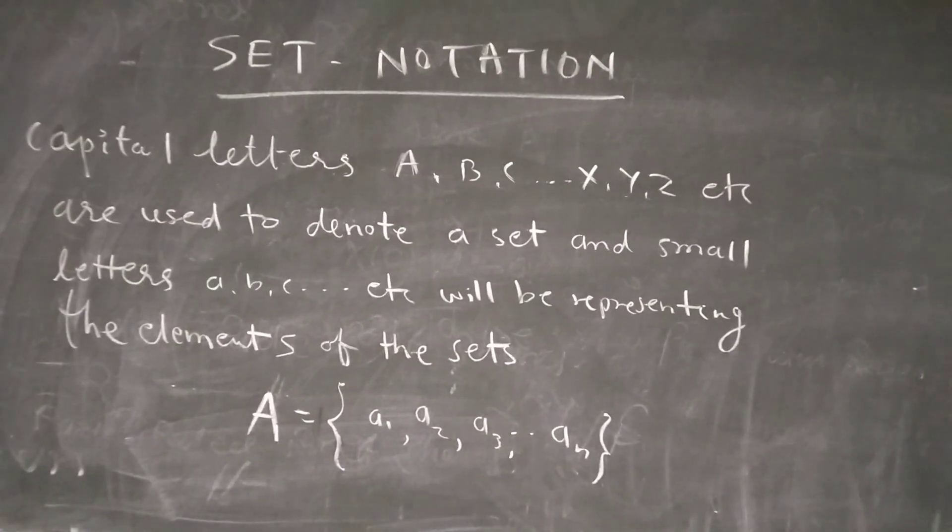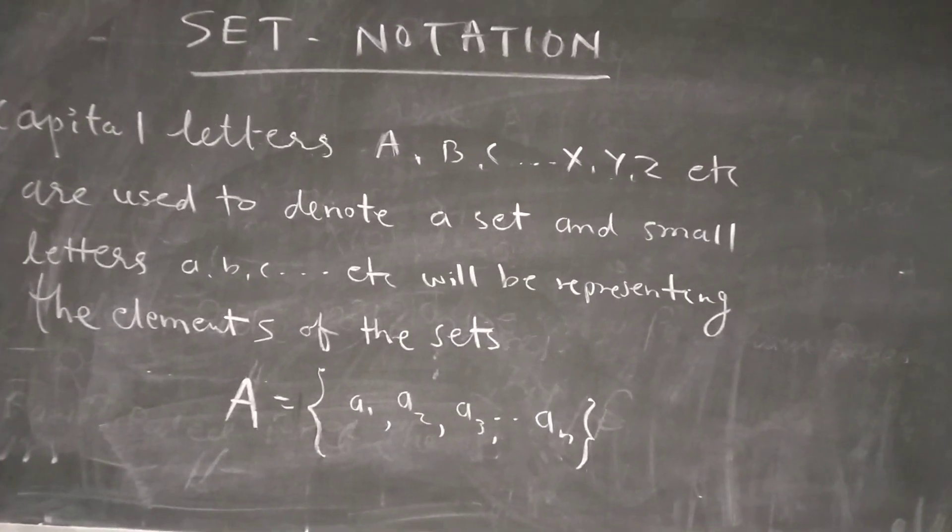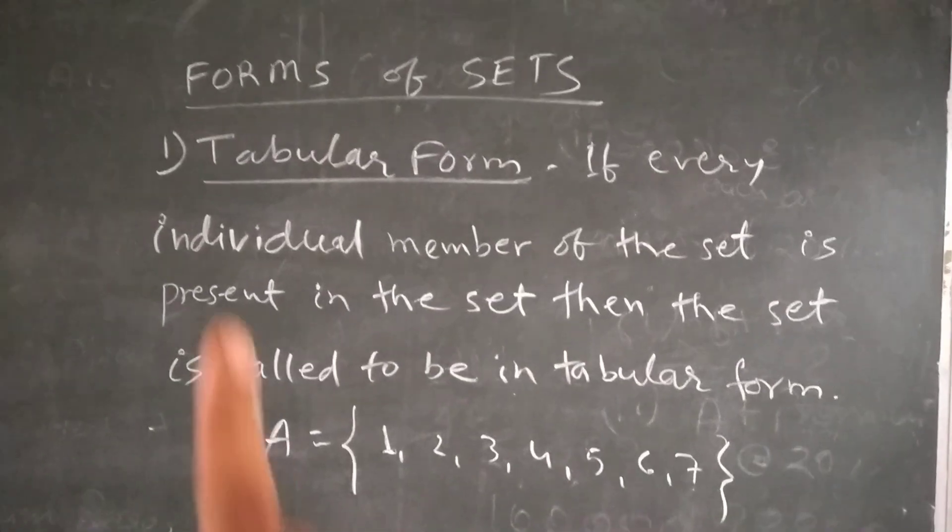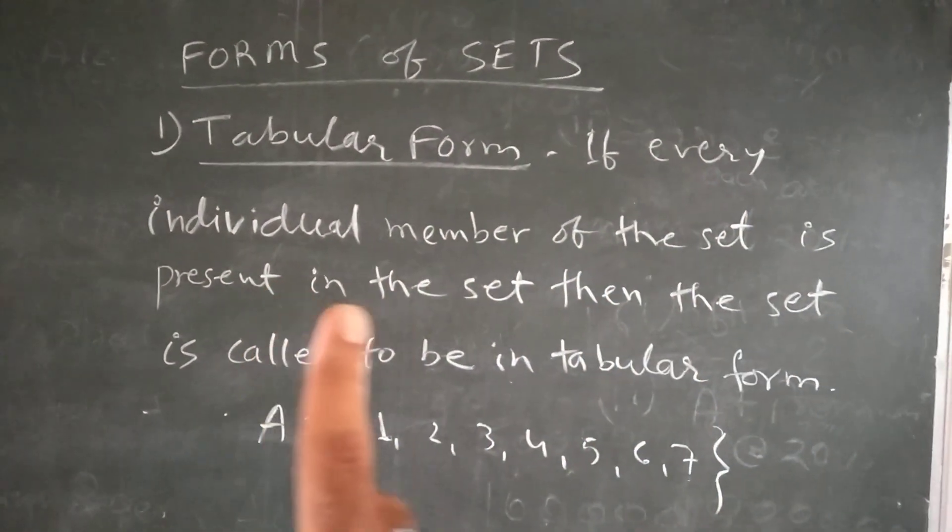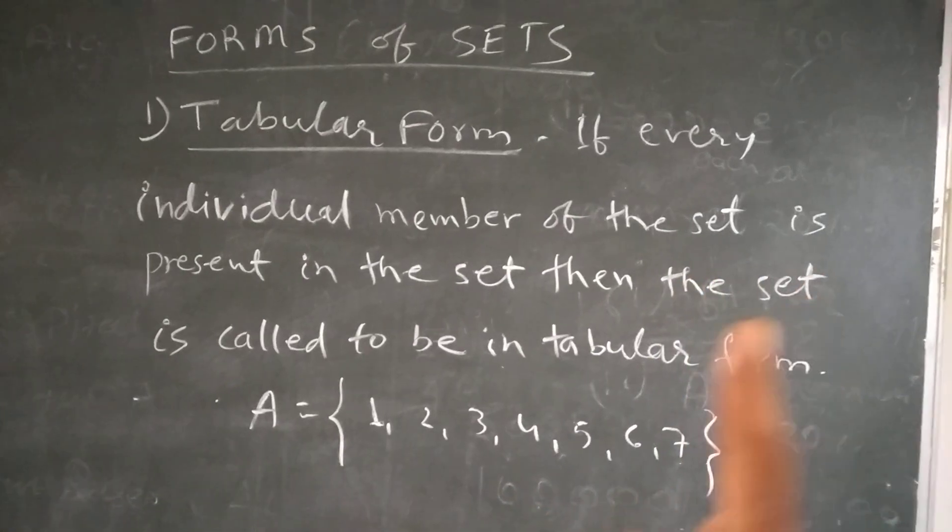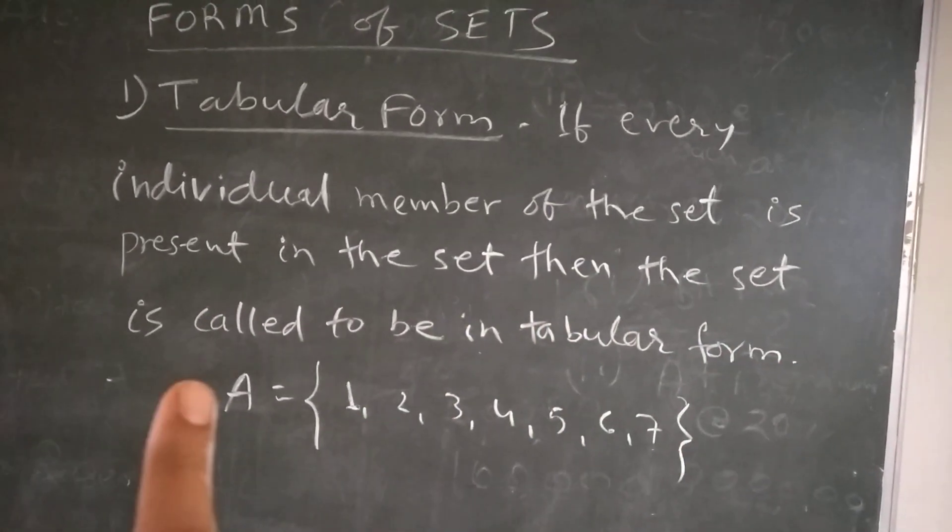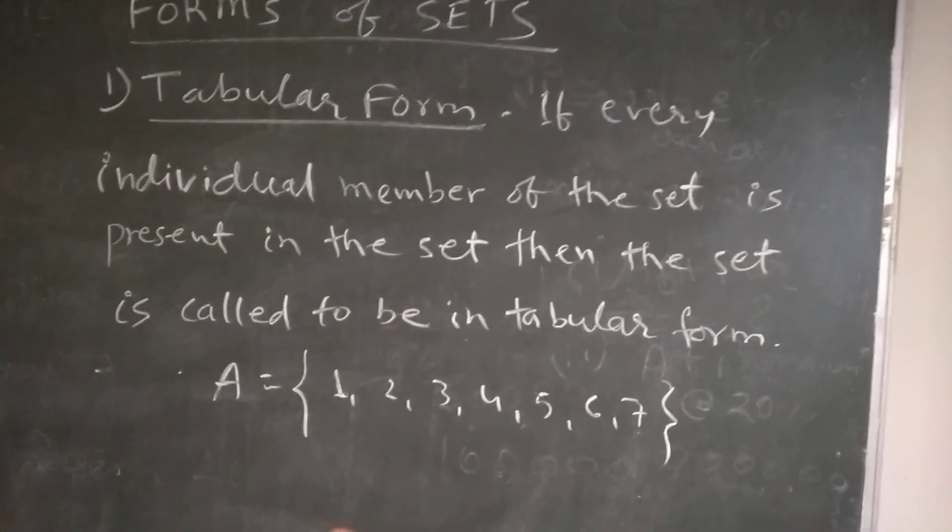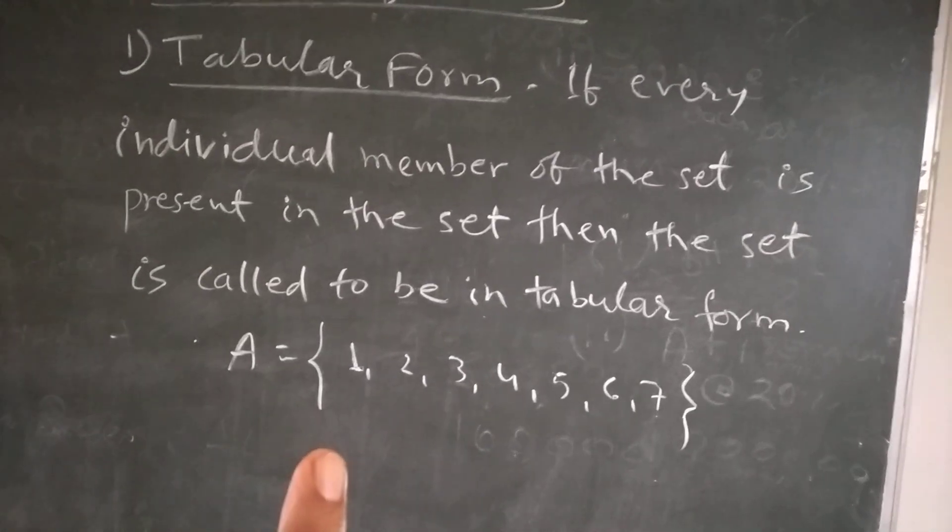Now we will see that we can write two forms. We say that the set of two forms are tabular form and set builder form. The first form is tabular form. If every individual member of the set is present in the set, then the set is called to be in tabular form.